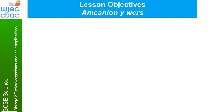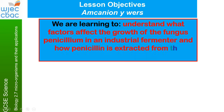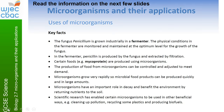Hello, Year 11 Triple Science. This is the last lesson in your booklet B2.7 Microorganisms and Their Application. The lesson objective today is to understand the factors that affect the growth of the fungus Penicillium in an industrial fermenter and how the antibiotic penicillin is extracted from the surrounding medium. There's some information on this and the next few slides and we're going to read through it together to look at why we might want to grow lots of a particular microorganism in a fermenter, sometimes called a bioreactor.